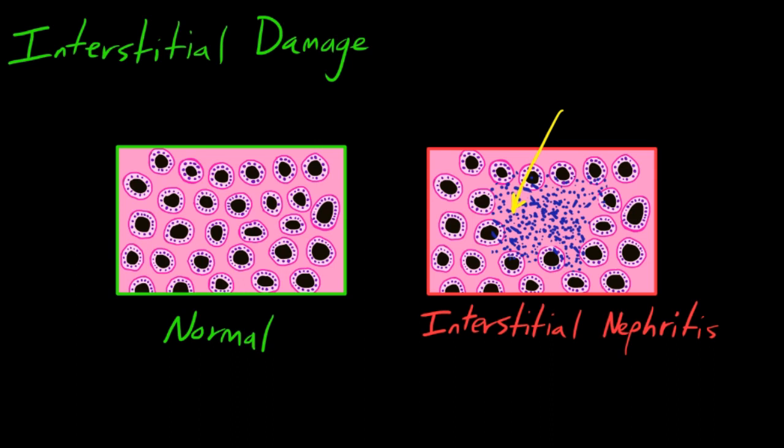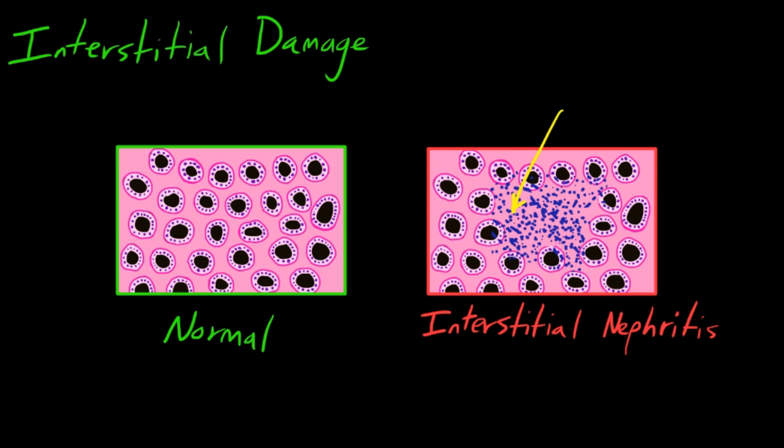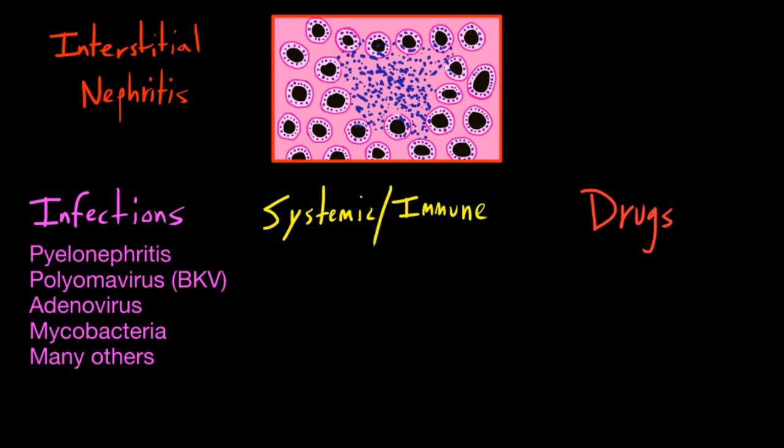Let's go over a couple of things that can cause interstitial nephritis. The main buckets are: infections, systemic and immune-related diseases, and medications. For infections, pyelonephritis is essentially a bacterial infection that has made its way up to the kidney. It's a form of interstitial nephritis that causes acute kidney injury. Patients are typically pretty sick, and the cells infiltrating the tubules and interstitium are PMNs — neutrophils.